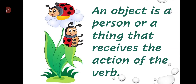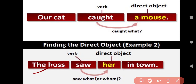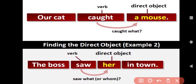What is an object? An object is a person or a thing that receives the action of the verb. The subject performs an action and the object receives it. For example: a cat called a mouse. Here, the cat is the subject — it is performing the action. The mouse is receiving the action, so it is the object.